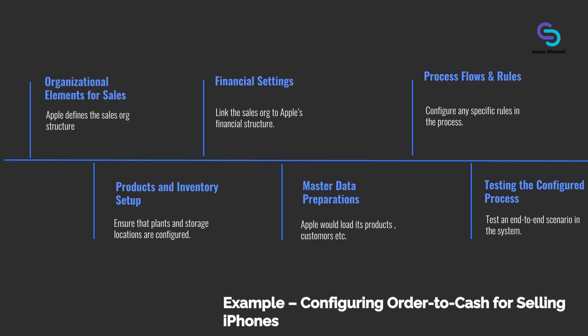Another example: Apple's fiscal year isn't the calendar year. In reality, Apple's fiscal year might start in October. In the finance configuration, there is a setting for fiscal year variant. SAP provides variants like K4 for calendar year. If Apple needs a different one — say one that starts in October — they would configure a new fiscal year variant or adjust an existing one to match their financial calendar, and assign it to their company code. That way, all financial postings for Apple will be aligned to Apple's reporting periods.